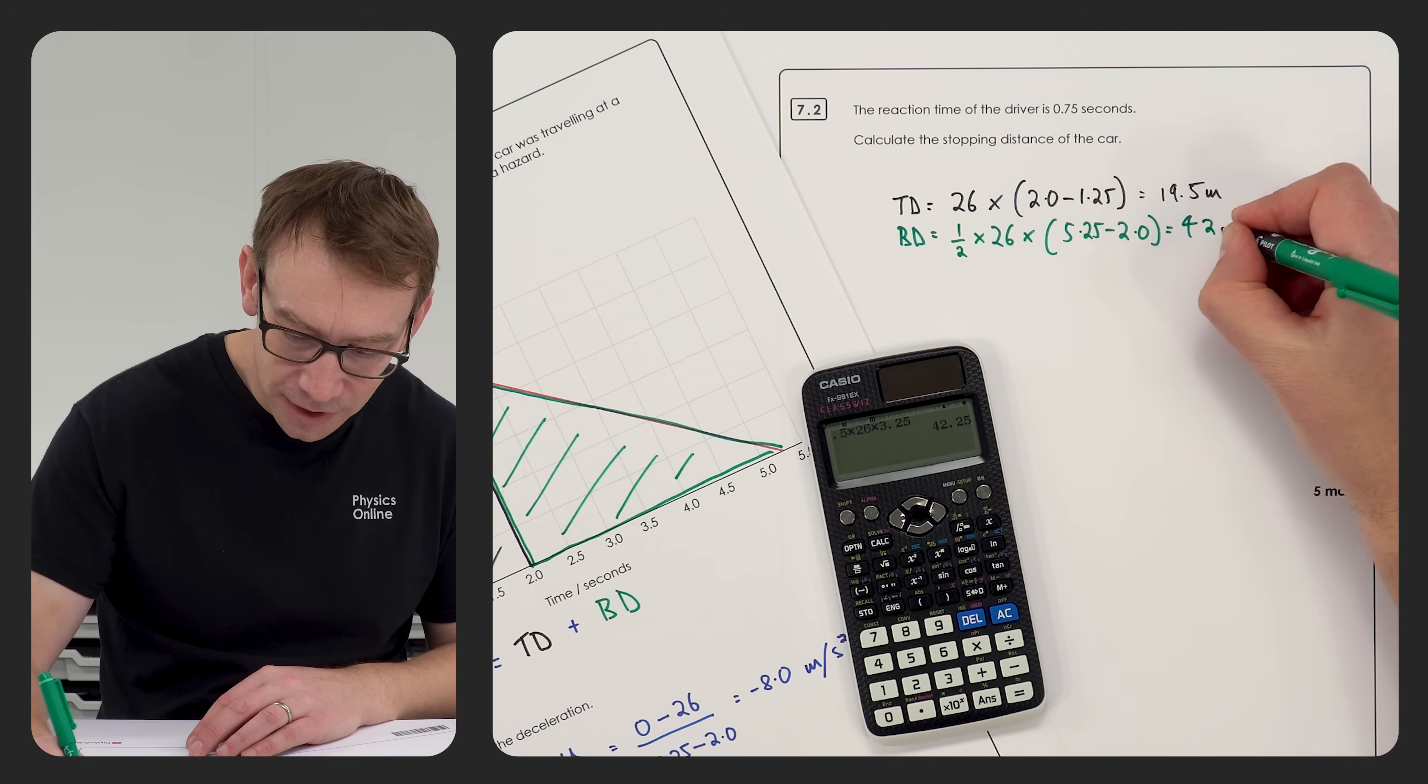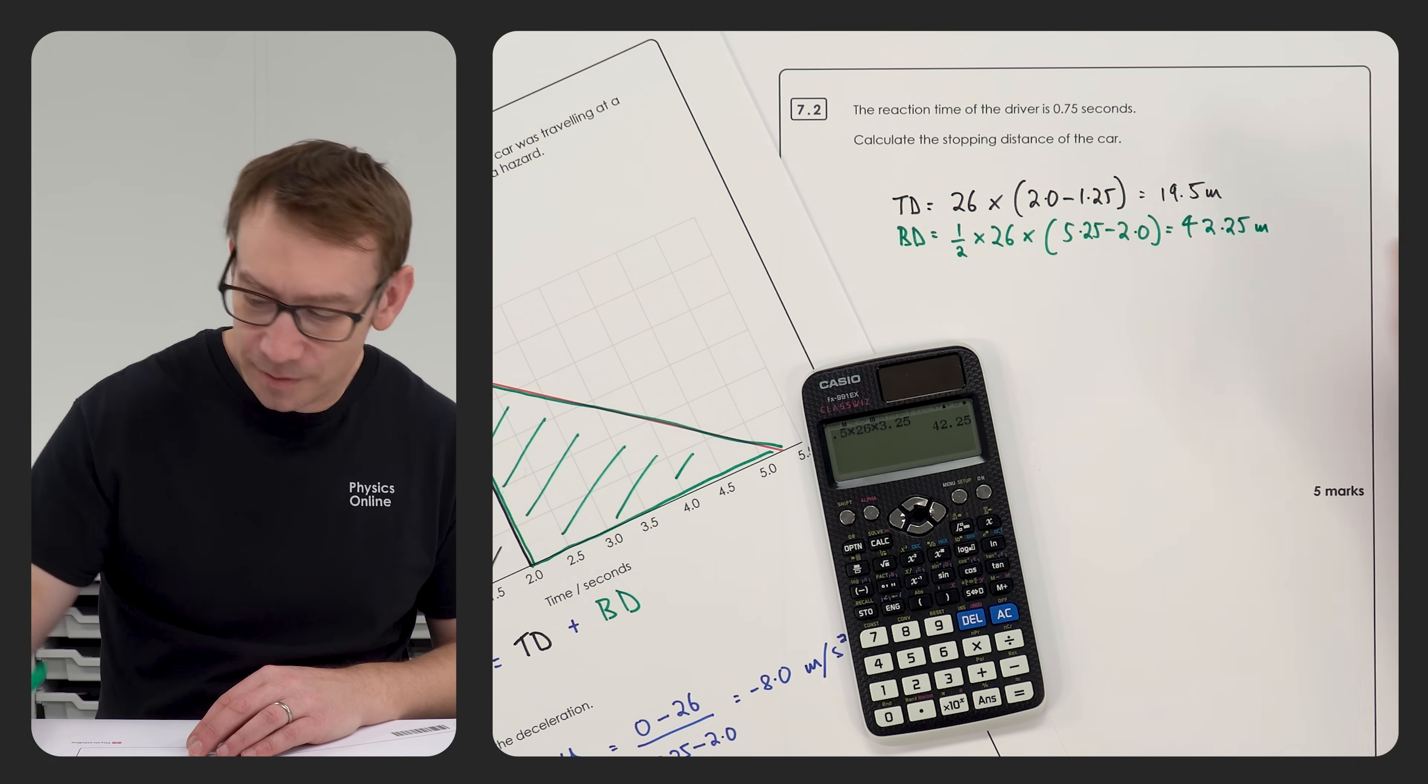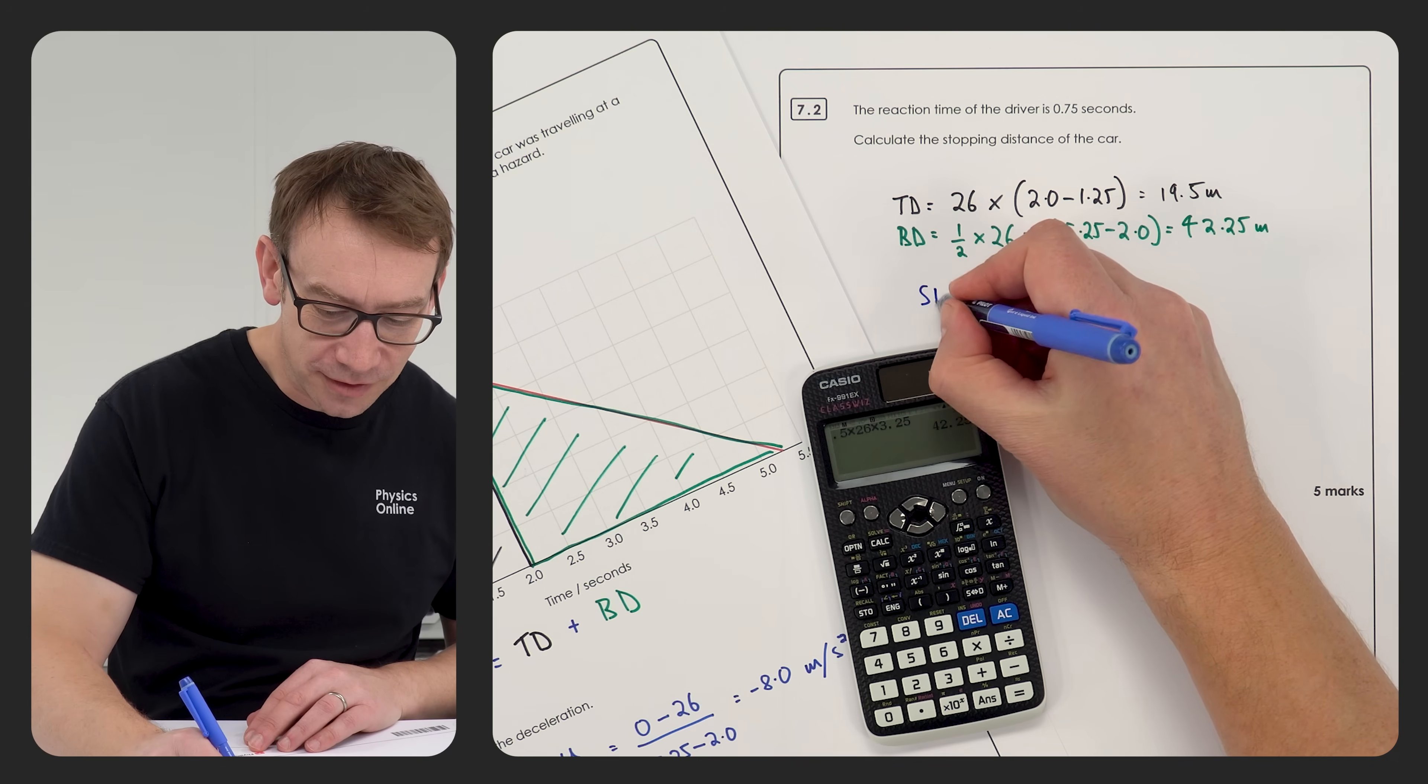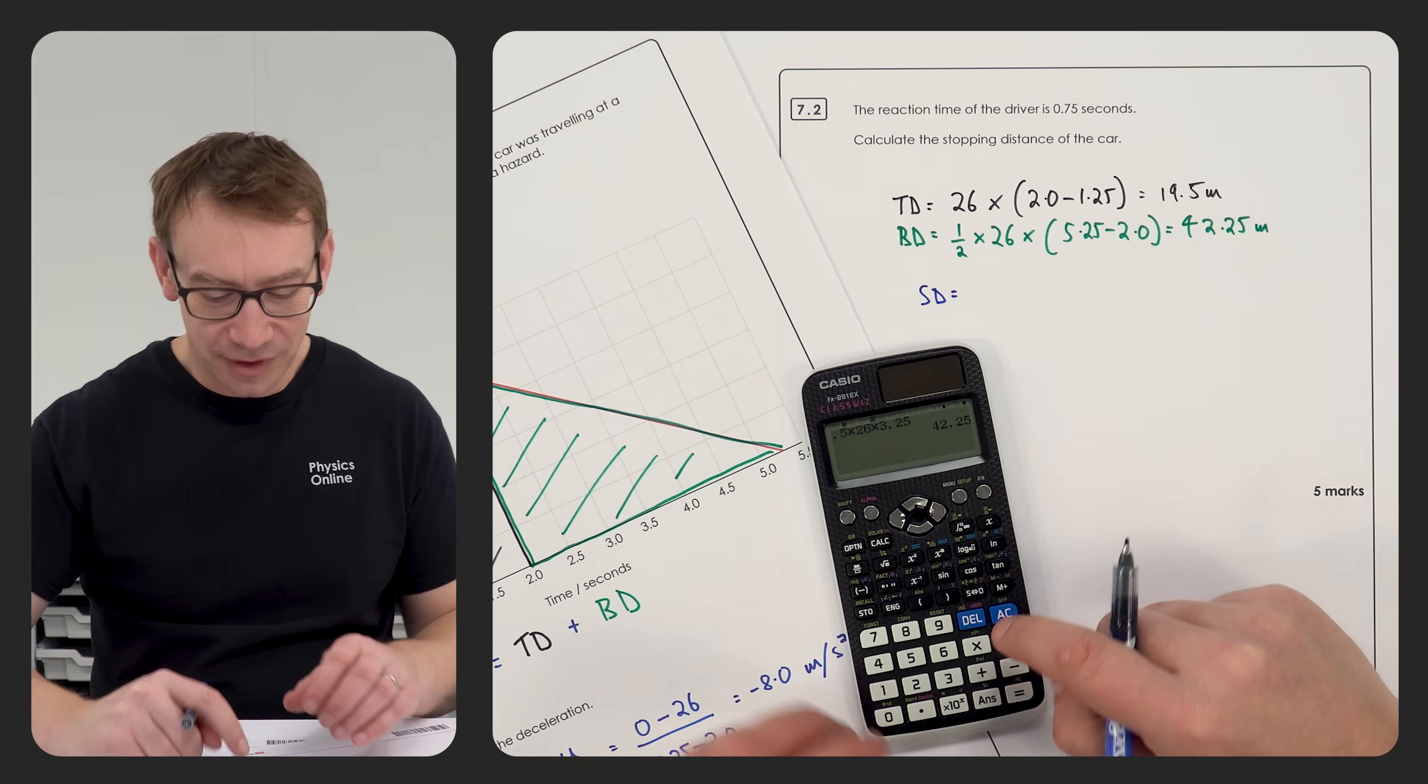Which now then means the total stopping distance, it's just going to be these two numbers added together.